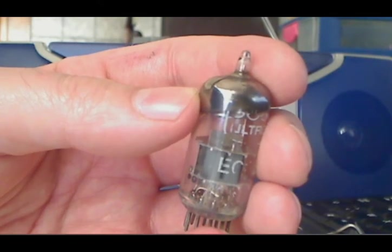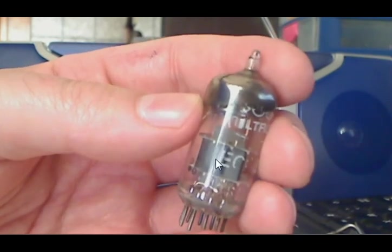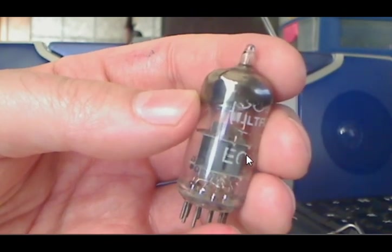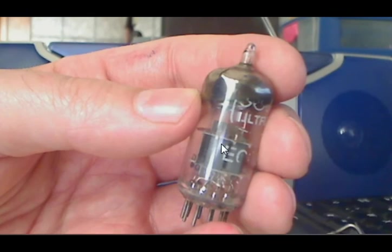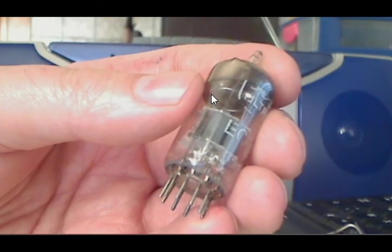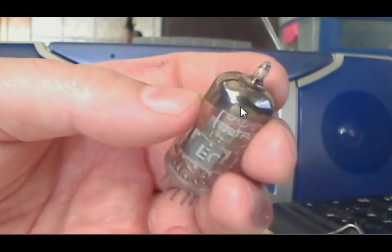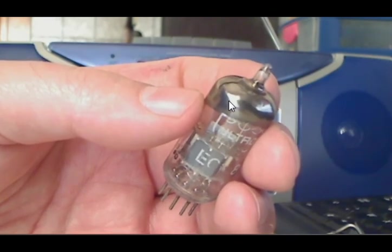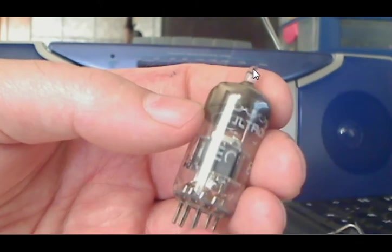This is the ECC88. It is a double triode valve. You can see here the two separate anodes, the grey metal surfaces here. At the top we can see the getter. The metallic coating here at the inside of the tube is the barium that is deposited into this tube.